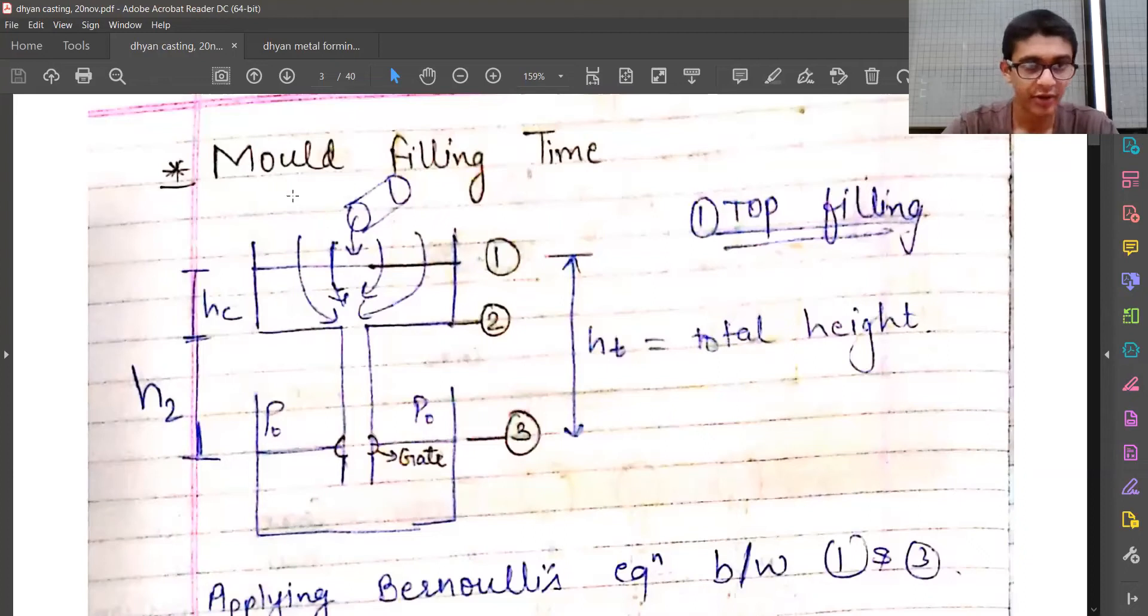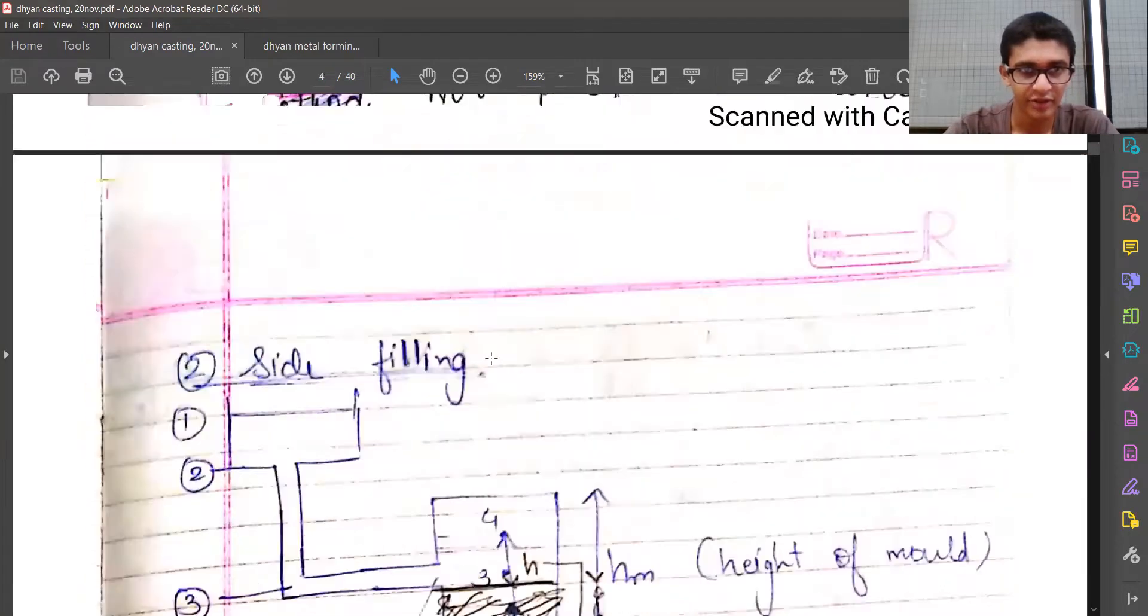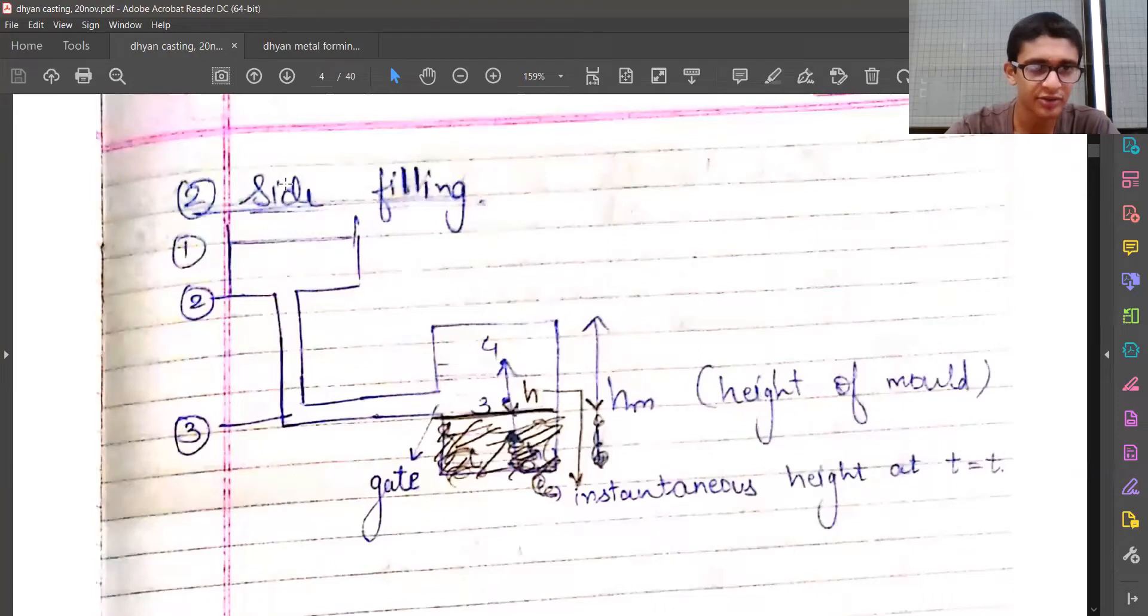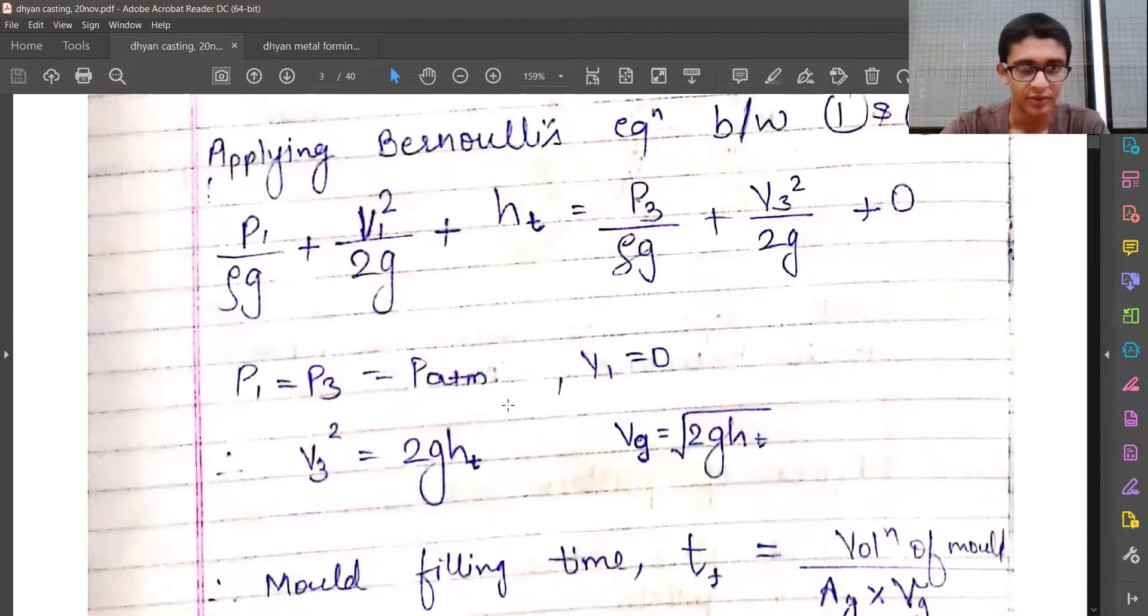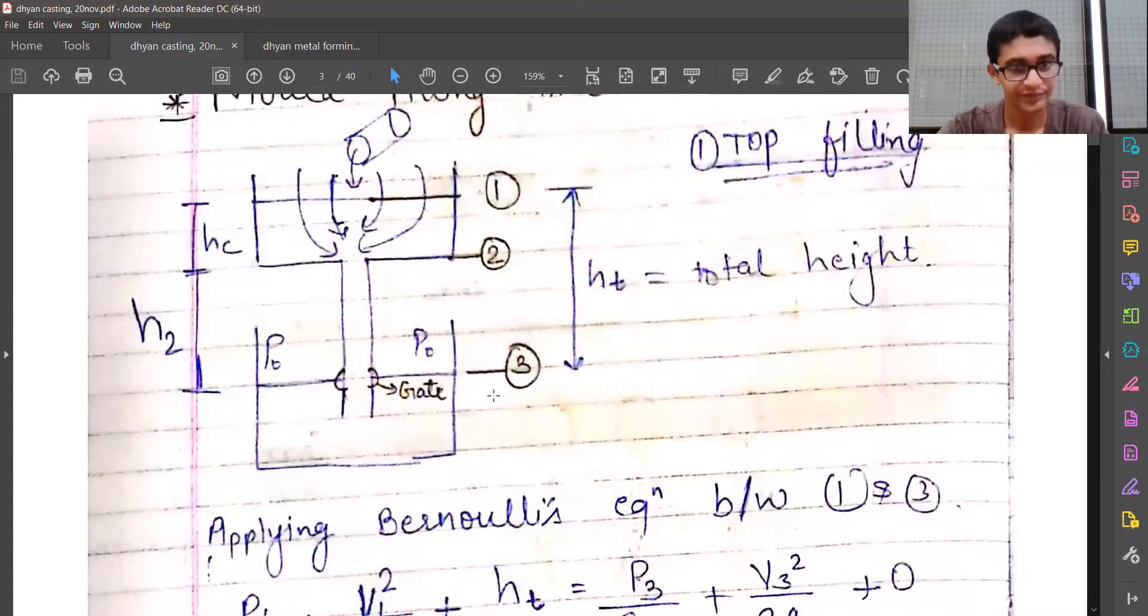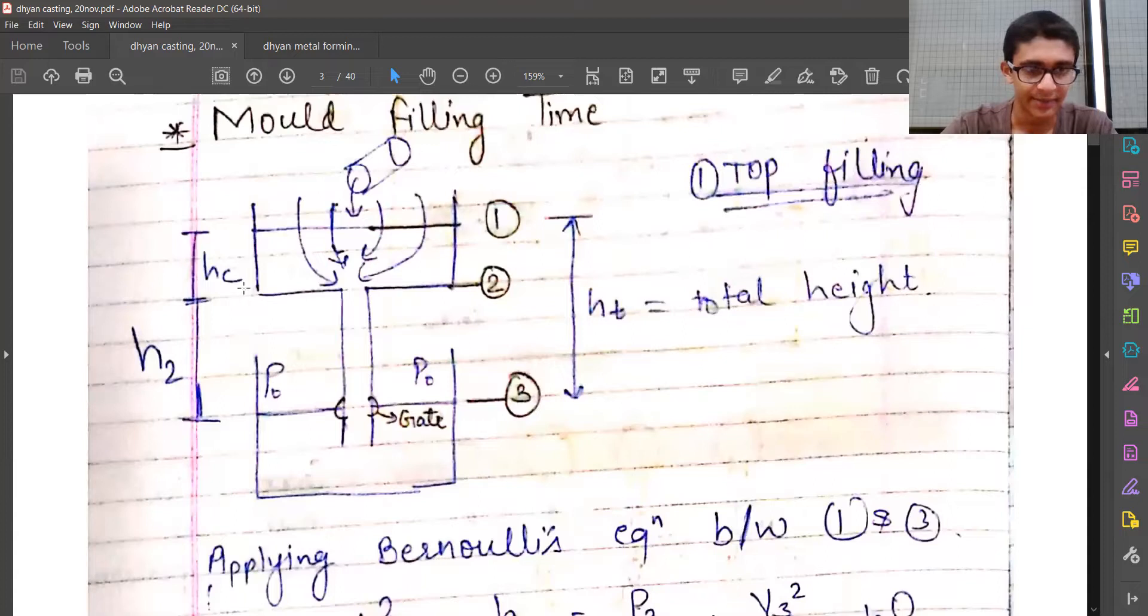Let's go ahead with the calculation for mold filling time. I will be deriving two formulas. The first one will be top filling, when we pour the material from the top. In the second case, we pour the material from sidewards. Over here, effectively we pour it from the top, but when it enters the mold, it is entering from sidewards. Let's start with the simple things we need to remember.